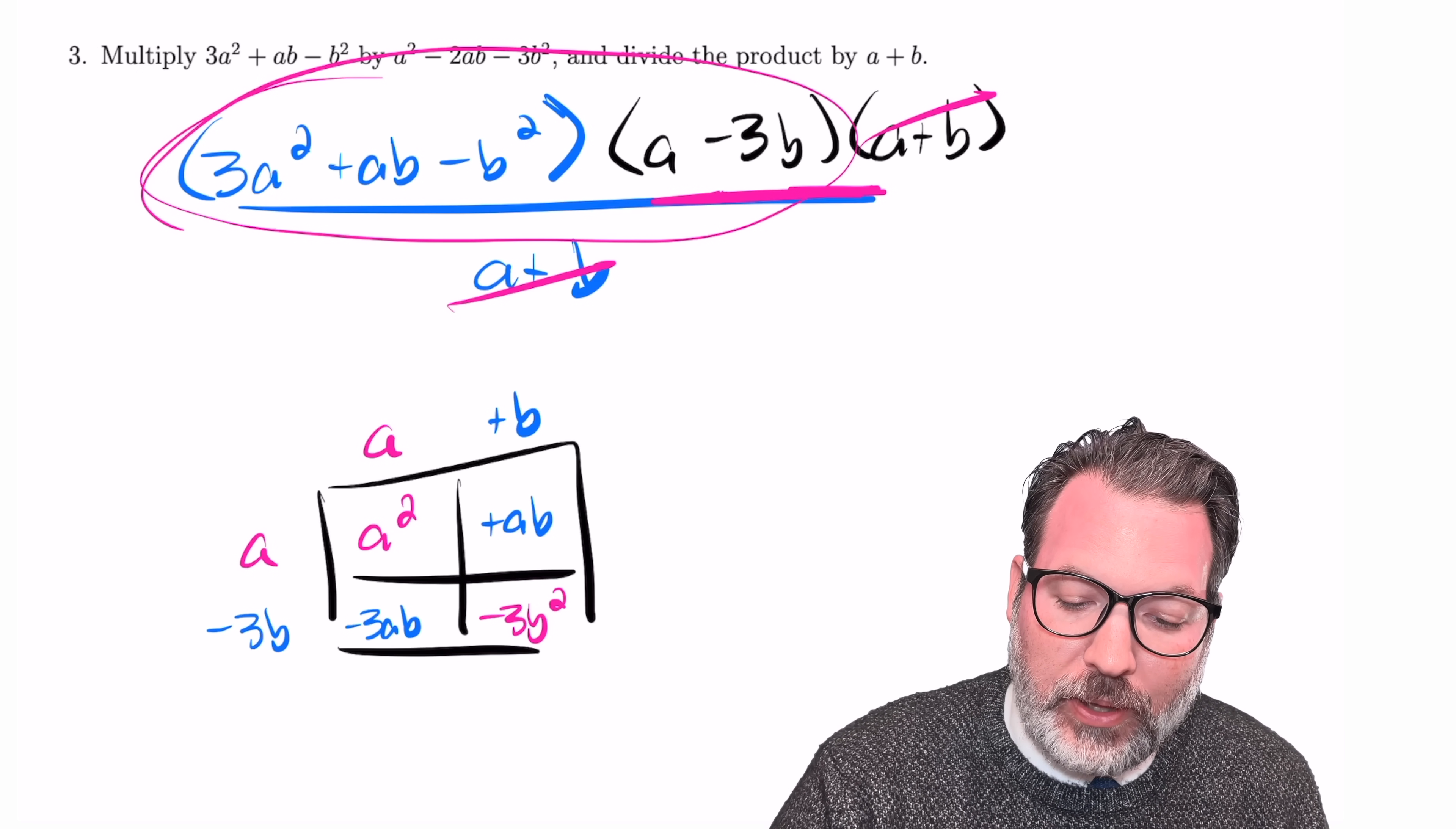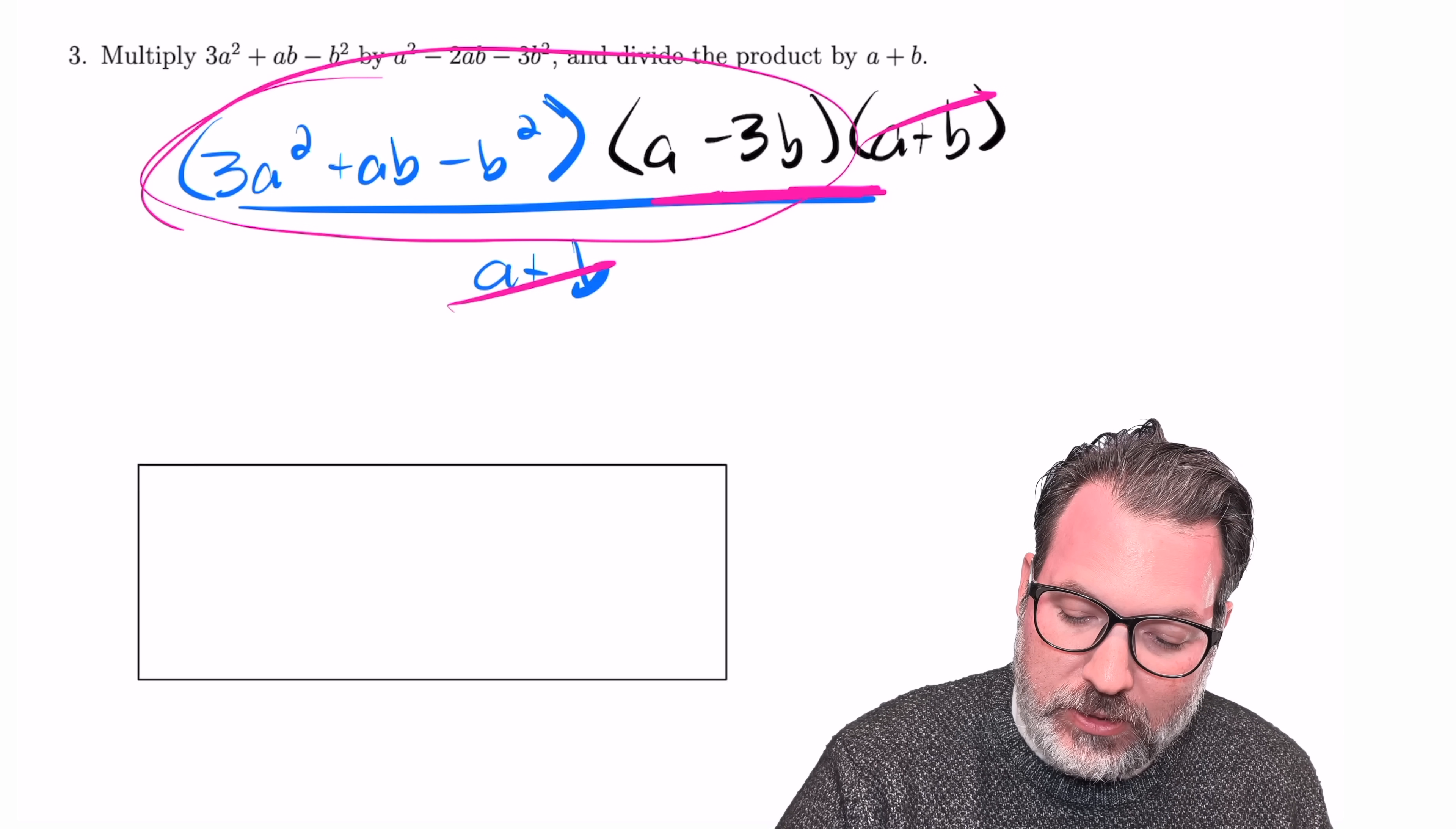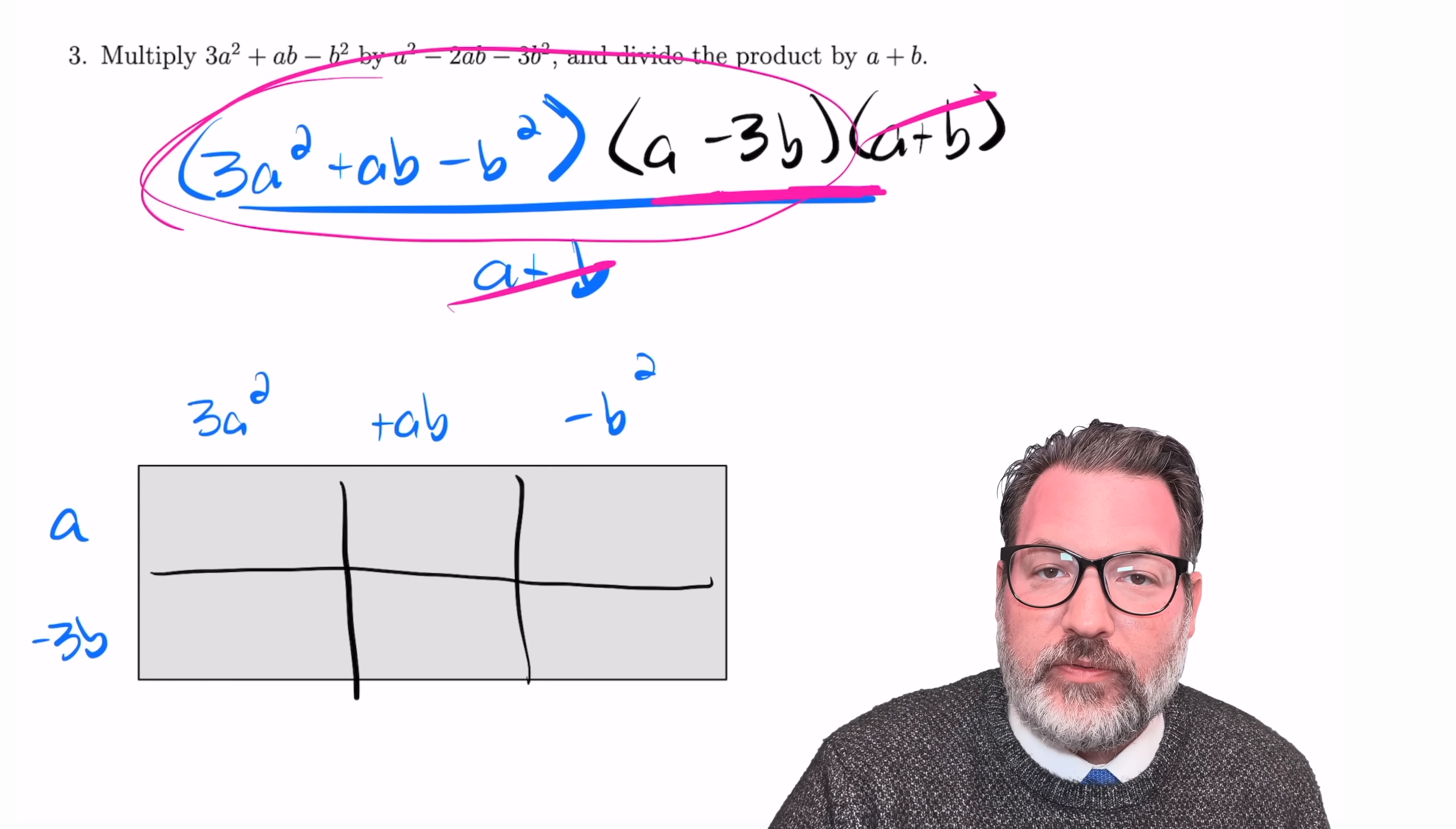Now, instead of multiplying a trinomial times a trinomial, I'm just going to end up multiplying a trinomial times a binomial, which is a little bit easier. To push our modern technique a little bit further, we can also use the box method for that multiplication. We're going to draw a 2 by 3 box, 2 by 3, because we're multiplying a binomial with two terms times a trinomial. The a minus 3b, the two terms, we'll put down the side of our box here, and then the 3a squared plus ab minus b squared will go across the top of this box.